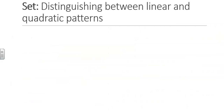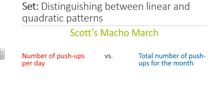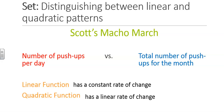In the task you did today in class, Scott's Matcha March, you compared a function that described the number of push-ups per day with a function that described the total number of push-ups for the month. As you did that, you found there were two different types of functions: a linear function and a quadratic function. You found that a quadratic function has a linear rate of change, where a linear function has a constant rate of change. This knowledge will help you in this section of your assignment.